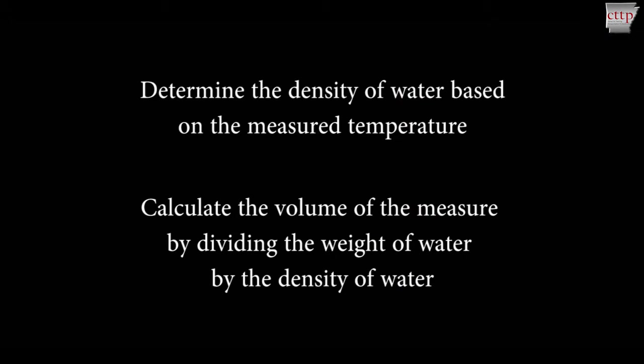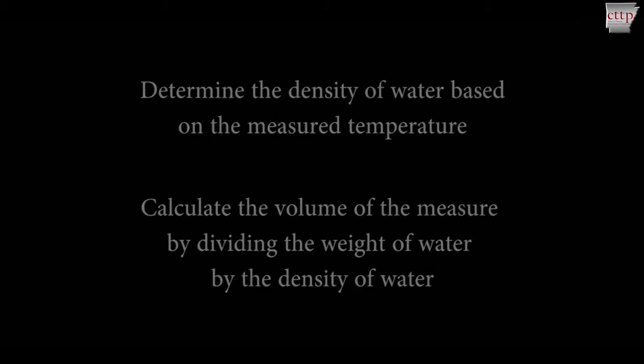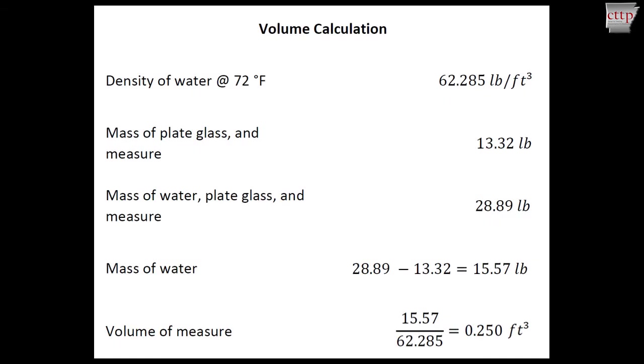Determine the density of the water based on the measured temperature. Calculate the volume of the measure by dividing the weight of the water by the density of the water. Report the volume to the nearest 0.001 cubic foot.